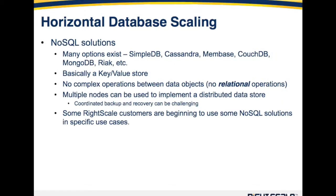The last concept regarding horizontal database scaling is NoSQL solutions. There are many options out there — for example, AWS SimpleDB, Cassandra, Membase, and others. These are all basically key-value stores in that no complex operations between data objects can be performed. You can also think of them as no-relational solutions, in that no relational operations can be performed among your data objects. If your application lends itself to this environment, NoSQL solutions can be very viable options. They typically implement a distributed data store using multiple nodes, though having a coordinated backup across those nodes can be very challenging. Some RightScale customers are beginning to use these solutions in specific use cases and getting great benefit from them.